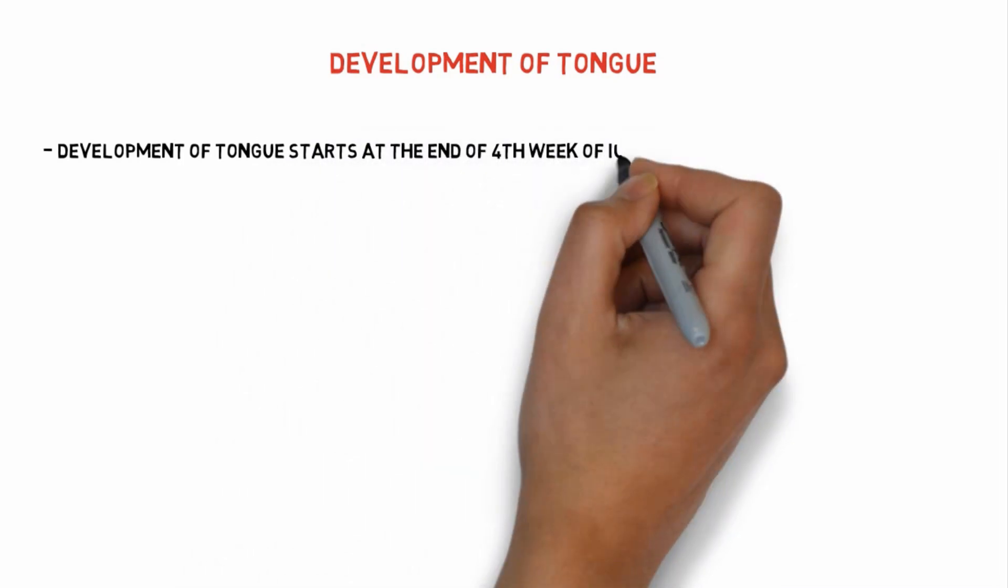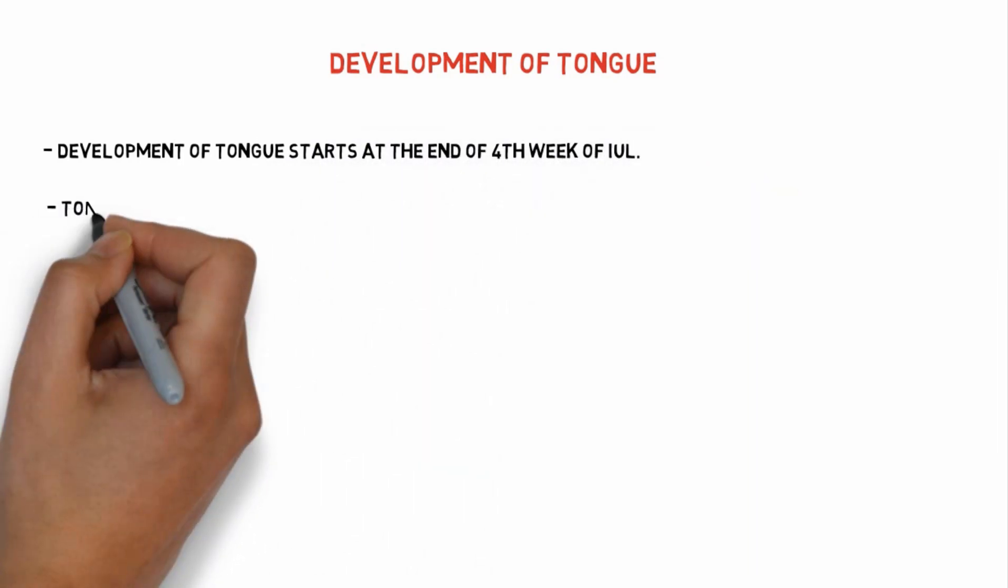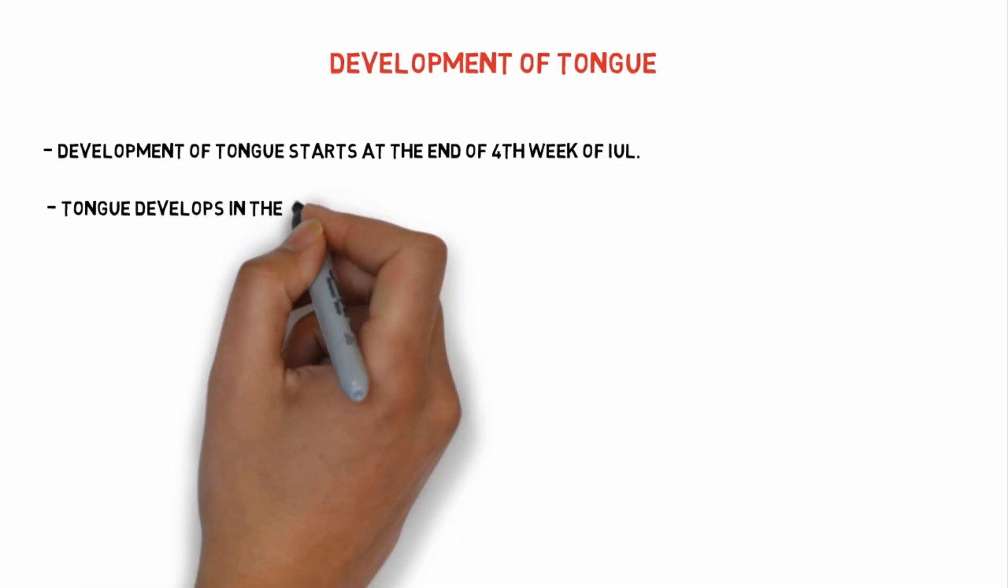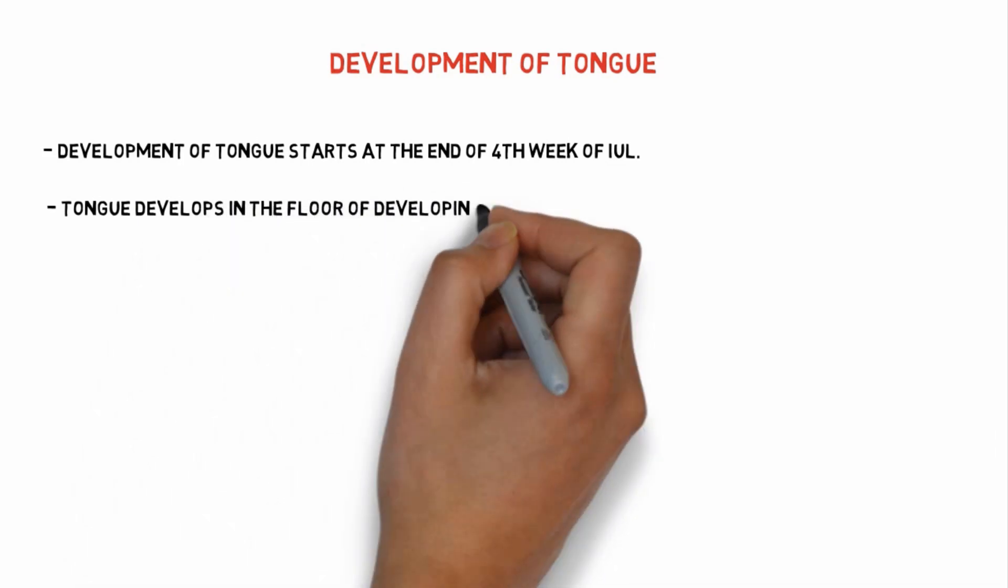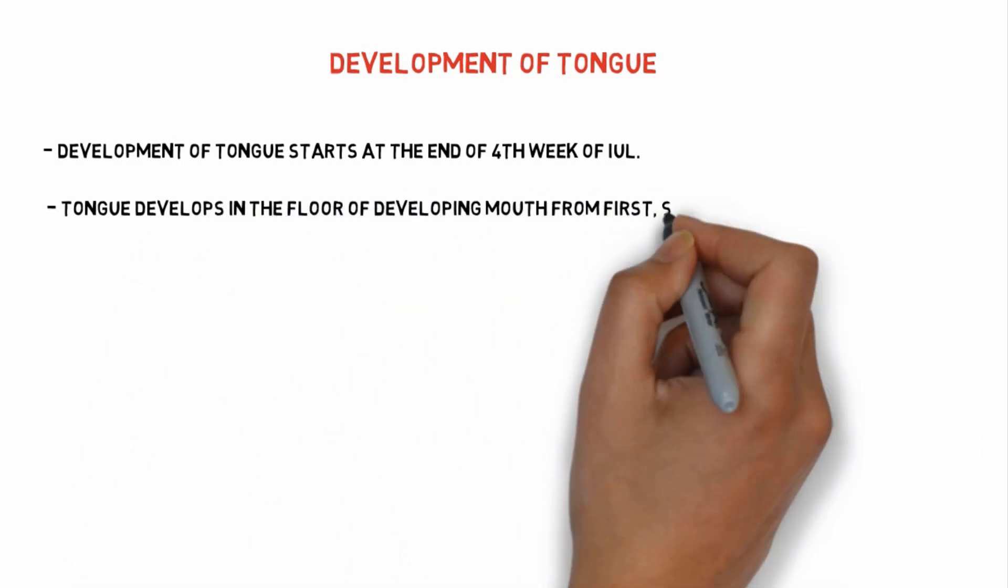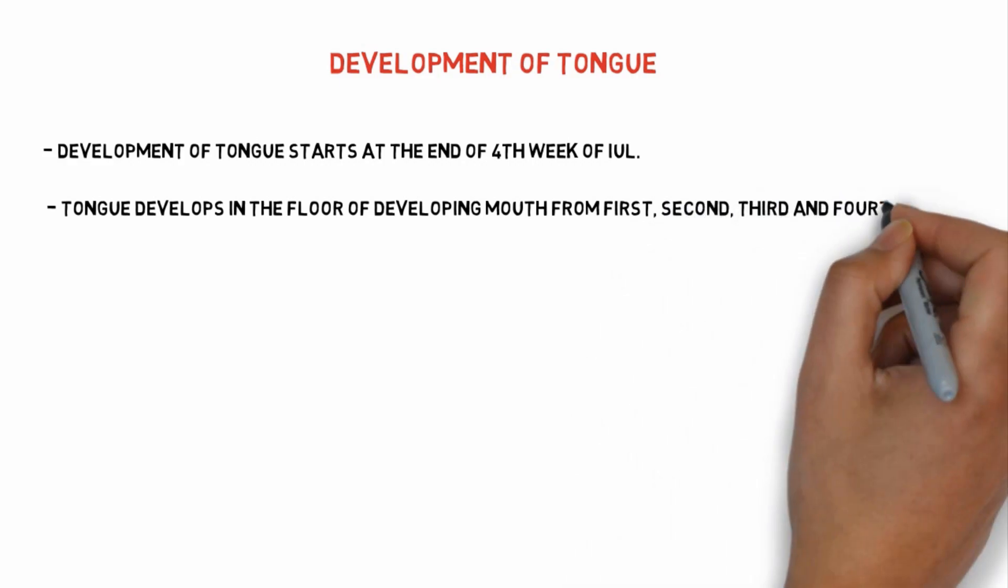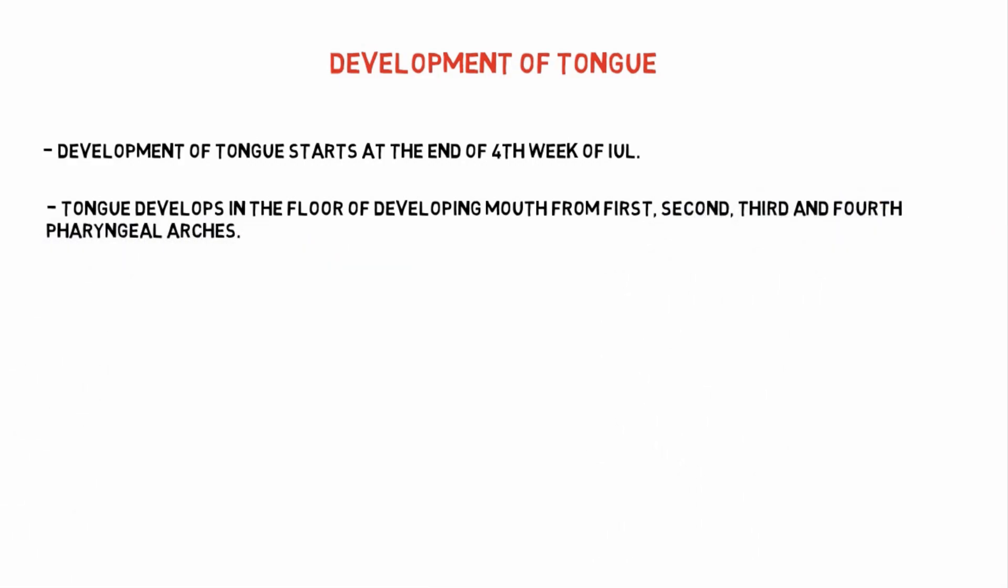Development of tongue starts at the end of fourth week of intrauterine life. Tongue develops in the floor of developing mouth from first, second, third and fourth pharyngeal arches.